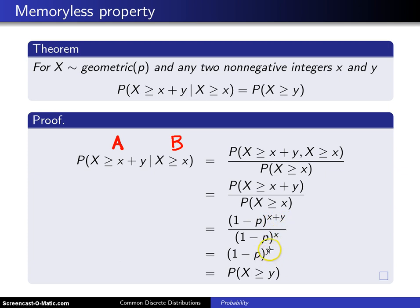So finally, this 1 minus p raised to the y power is the same, again by the CDF of the geometric distribution, as the probability X is greater than or equal to y, and that is our right-hand side.